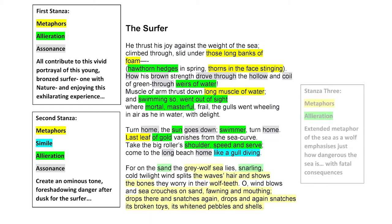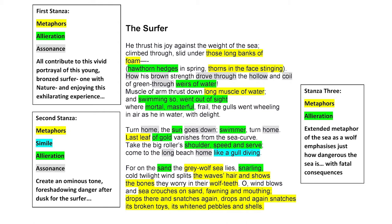And why so much anxiety? Because after dusk, the sea is evidently dangerous. Wright uses the metaphor 'grey wolf sea' to depict it as not to be trusted. What makes this such a great stanza is how Wright effectively extends the metaphor to build on this image of 'grey wolf sea' — as it crouches on sand, fawning and mouthing, drops there and snatches again, drops and again snatches. You'll notice the present tense verbs such as 'crouches,' 'fawning,' 'mouthing,' 'drops,' and 'snatches' — it captures this continuous, never-ending power. The sea's destructive nature is vividly captured by the metaphor of its 'broken toys,' its 'whitened pebbles and shells.'